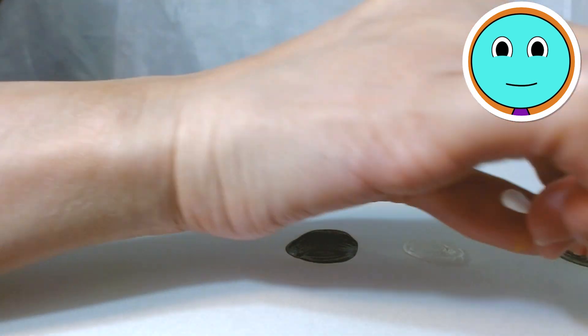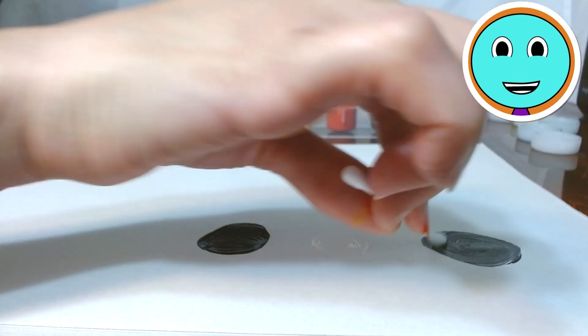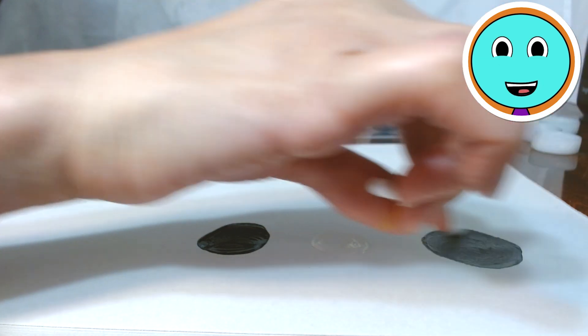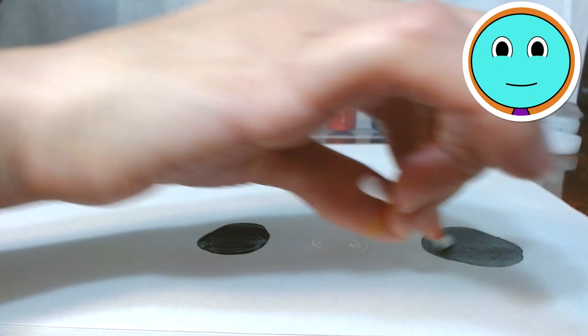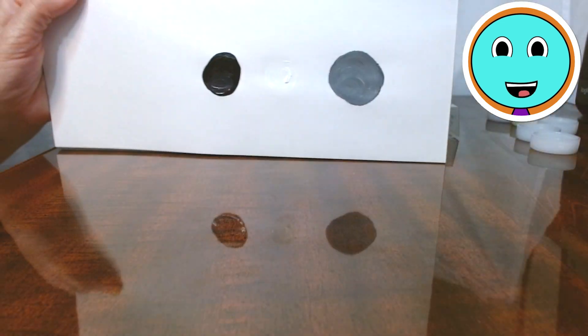And she's putting the black with the white. And mixing, mixing, mixing. Does it really make gray? Let's see. Yay! It made gray! Black and white makes gray.